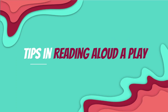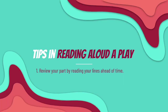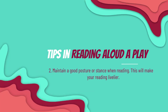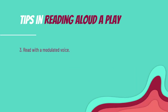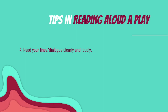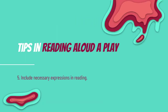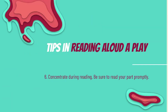Here are some tips in reading aloud a play. First, review your part by reading your lines ahead of time. Secondly, maintain a good posture or stance when reading — this will make your reading livelier. Number three, read with a modulated voice. Number four, read your lines and dialogue clearly and loudly. Fifth, include necessary expressions in reading. Sixth, concentrate during reading. Be sure to read your part promptly.